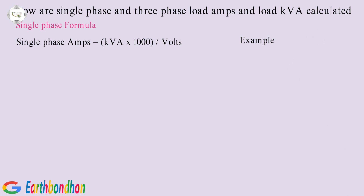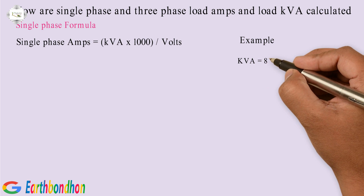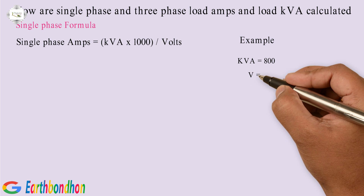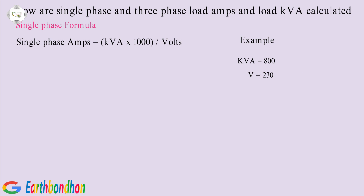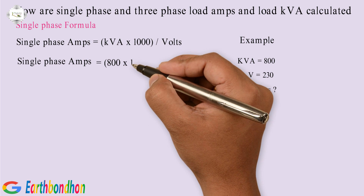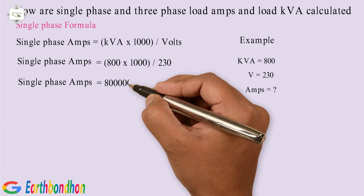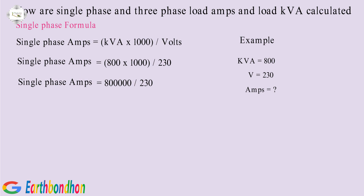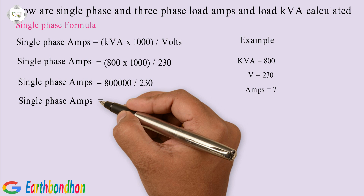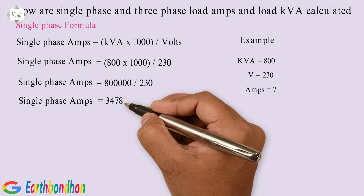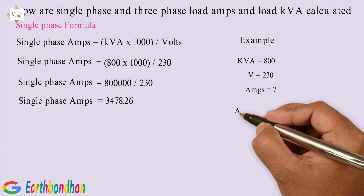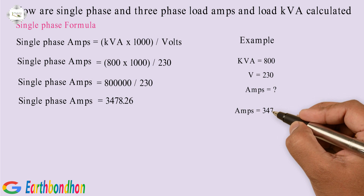Example: KVA equals 800, V equals 230, amps equals unknown. Amps equals 800 multiplied by 1000, divided by 230. Equals 800,000 divided by 230. Equals 3478.26 amps.